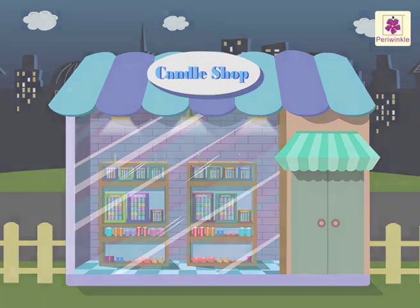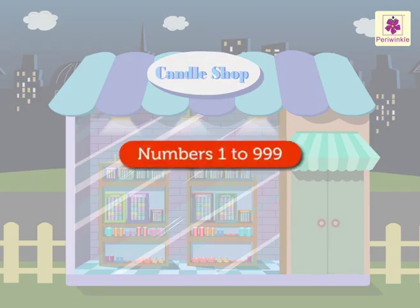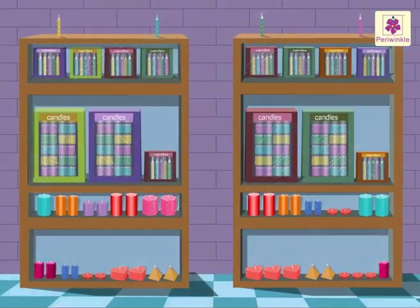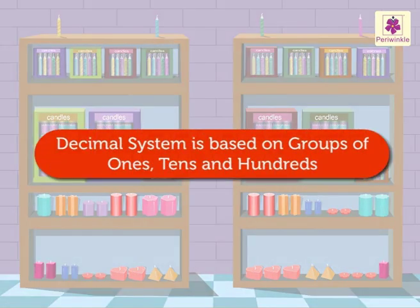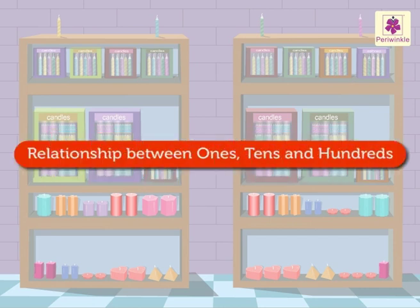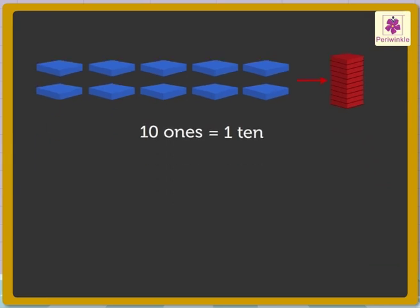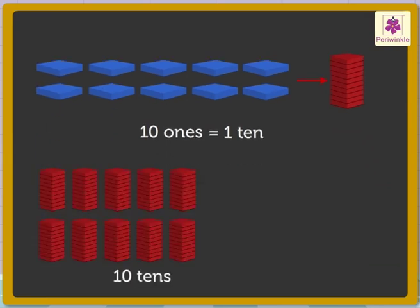Today, let us revise numbers 1 to 999 with the colourful candles at the candle shop. You all know that the decimal system we use is based on groups of 1s, 10s and 100s. Let us revise the relationship between them. We know that 10 ones make 1 ten, and when we group 10 tens together, we get 100.